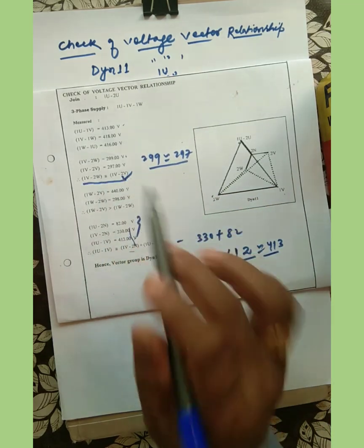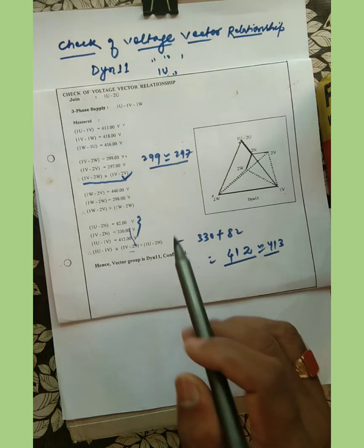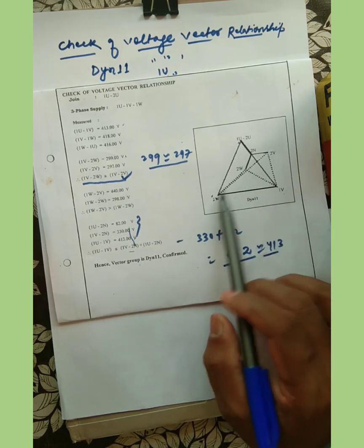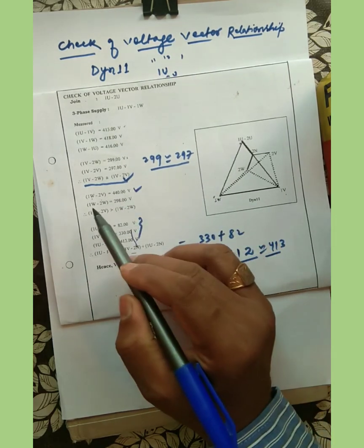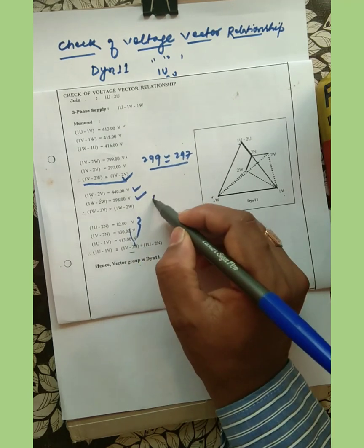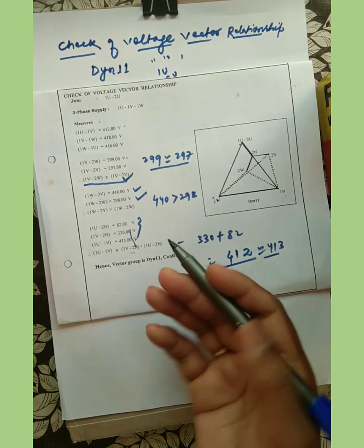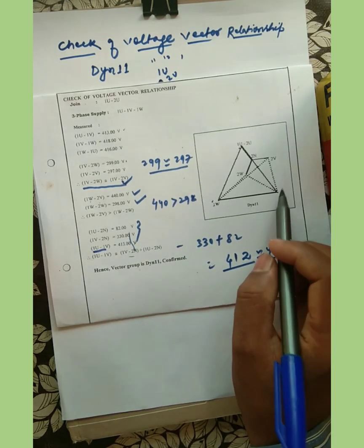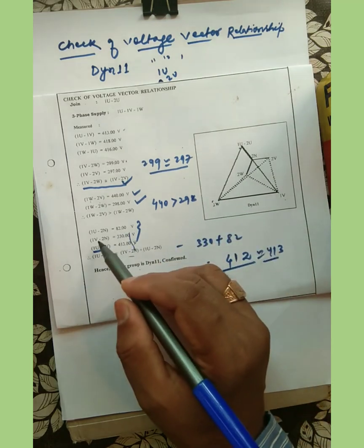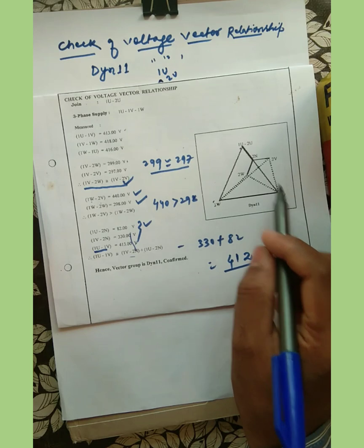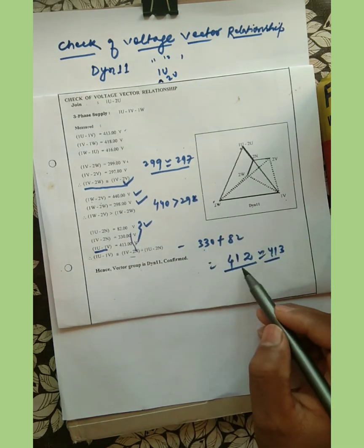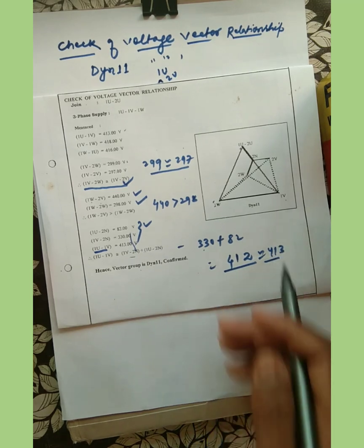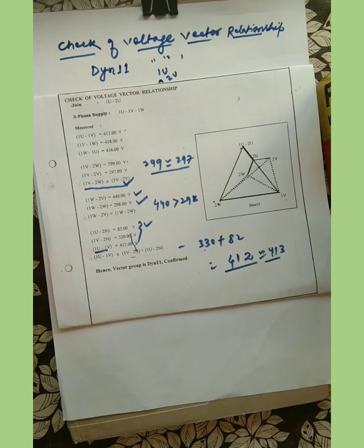For the second relation, 1W-2V should be greater than 1W-2W. They measured 1W-2V as 440V and 1W-2W as 298V, so 440 is greater than 298 — hence it is proved for DYN11. For the third relation, 1U-2N is 82V and 1V-2N is 330V. Adding them: 330 plus 82 equals 412, which is almost equal to the measured 1U-1V of 413V. We have proved all three equations and can confirm the vector group is DYN11.